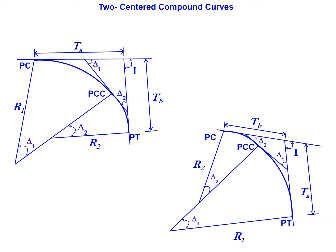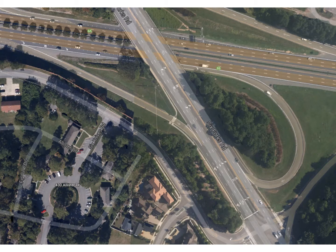Two-centered compound curves occur when two simple curves are placed back-to-back. The most common locations for these are loop ramps.